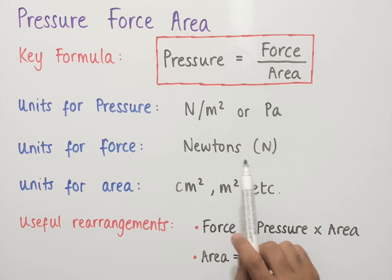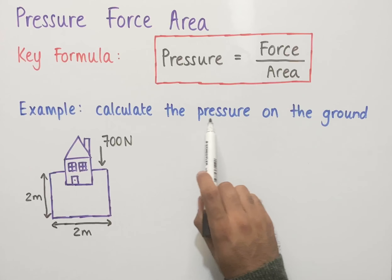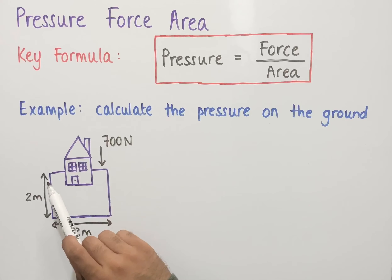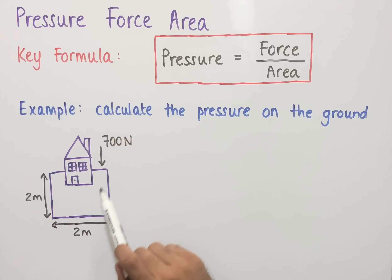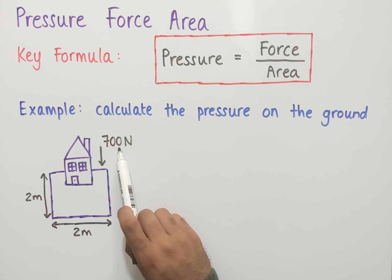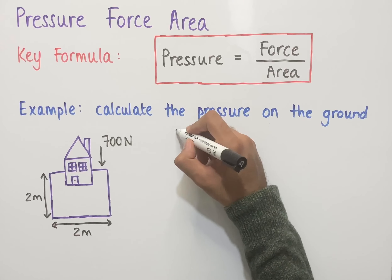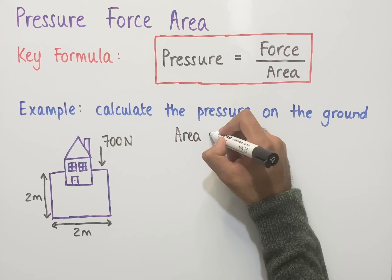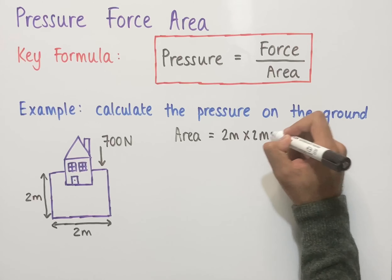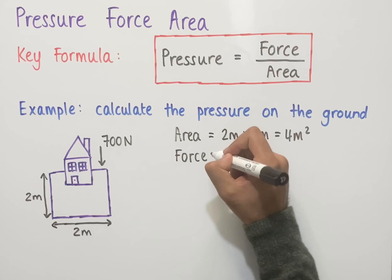Let's now look at some examples where we use this formula to work out either pressure, force, or area. The first example says: calculate the pressure on the ground. We've got a house and the ground, with some measurements and a force given. The house exerts a force of 700 newtons onto the ground. To work out the area of the ground, we use the length and width measurements: 2 meters multiplied by 2 meters gives us an area of 4 meters squared. The force in this question is 700 newtons.